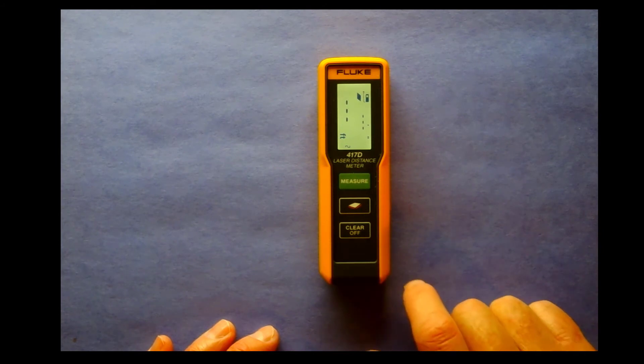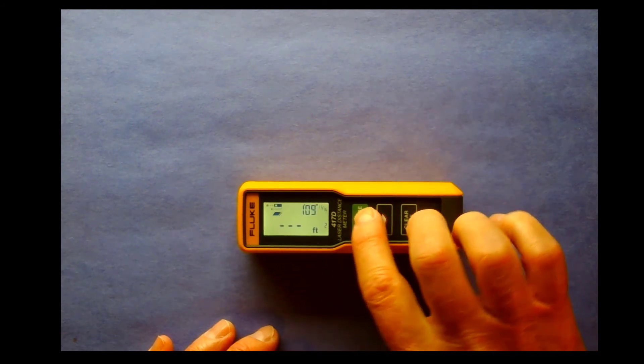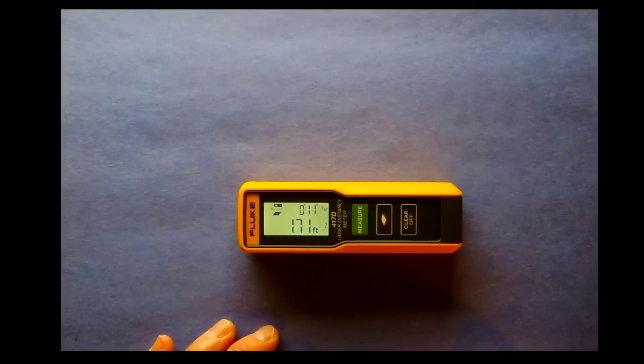So now you can actually take two measurements. Take one in one direction, take one in a second direction, and the unit will calculate and give you the square footage of the room or the area you just shot with the laser.